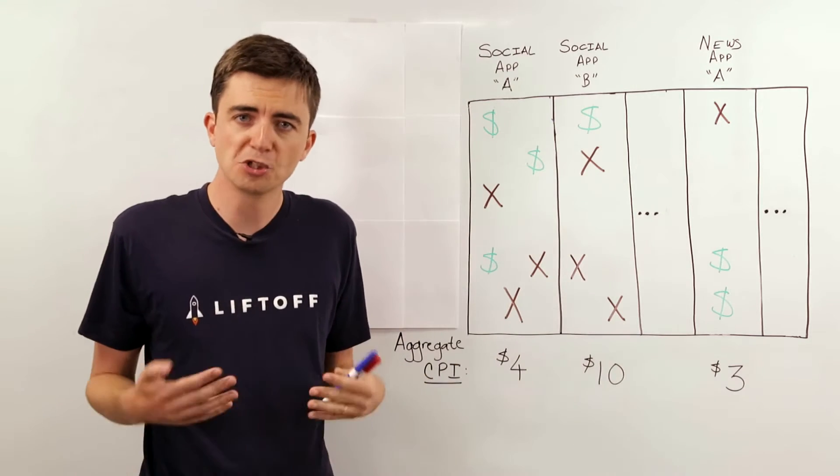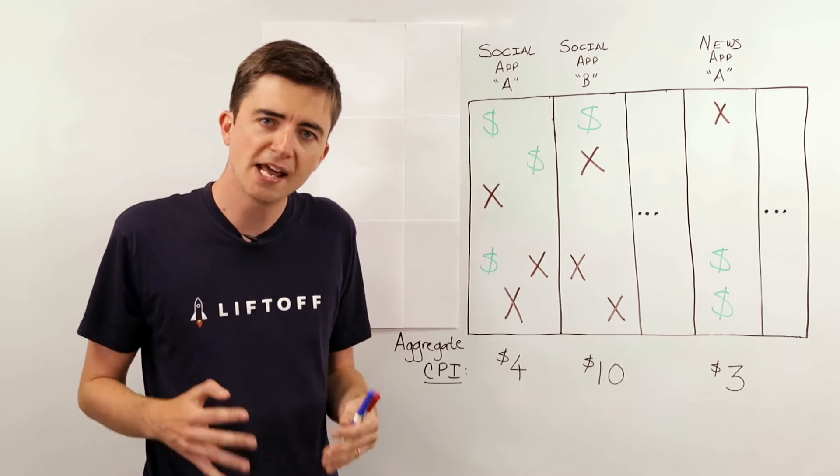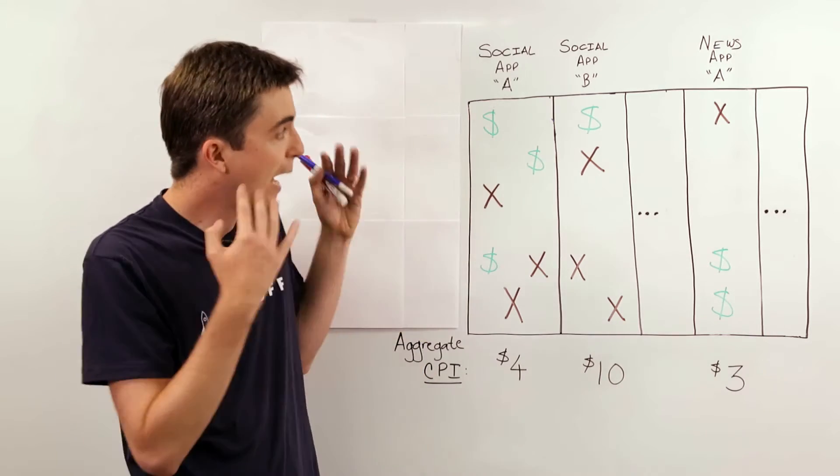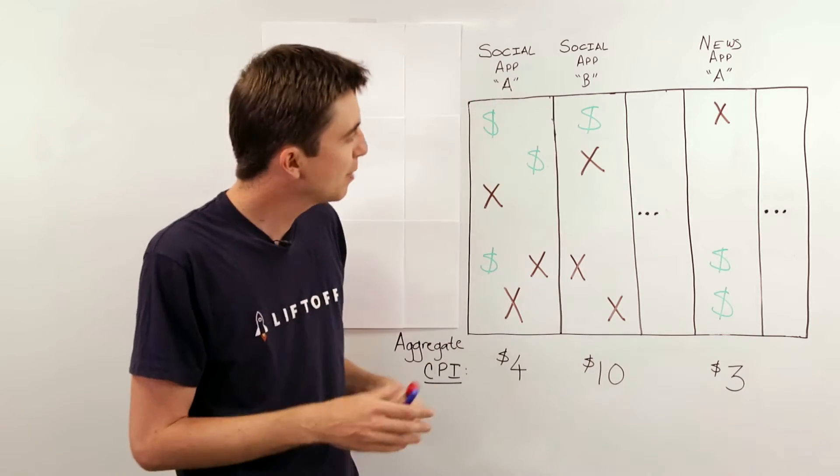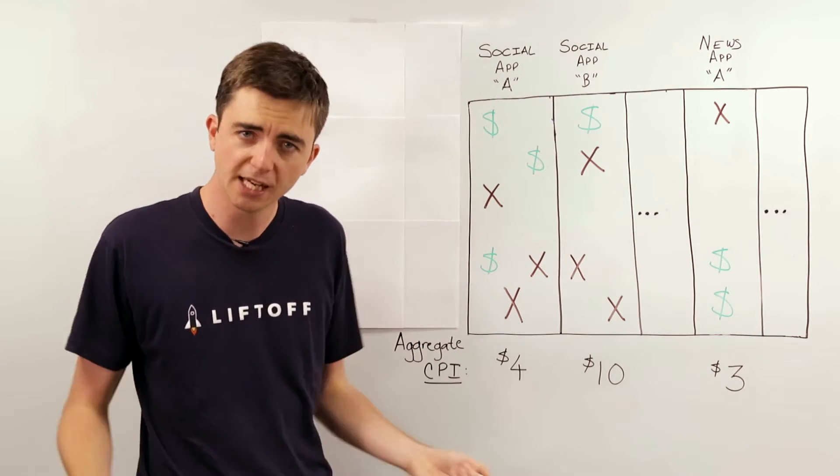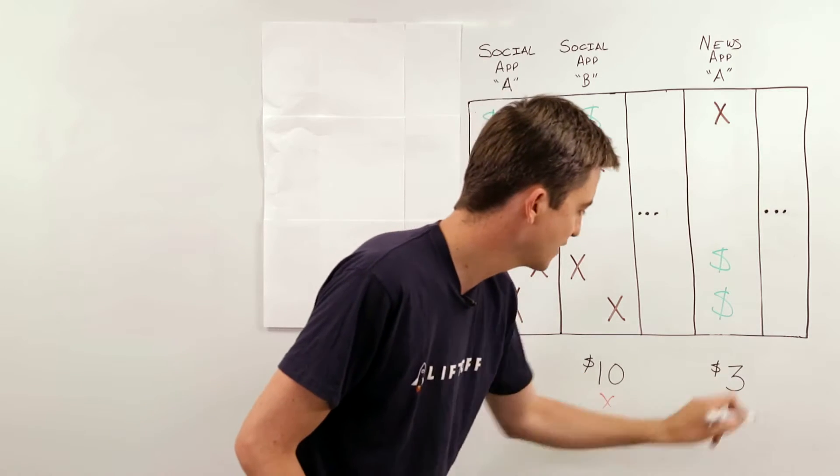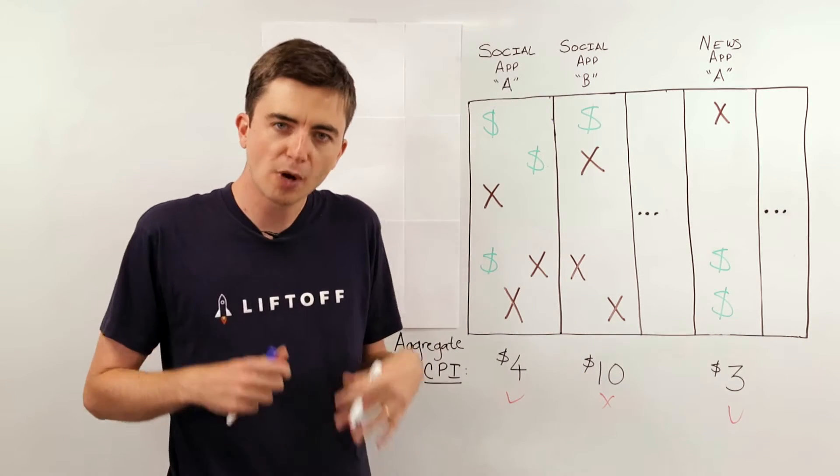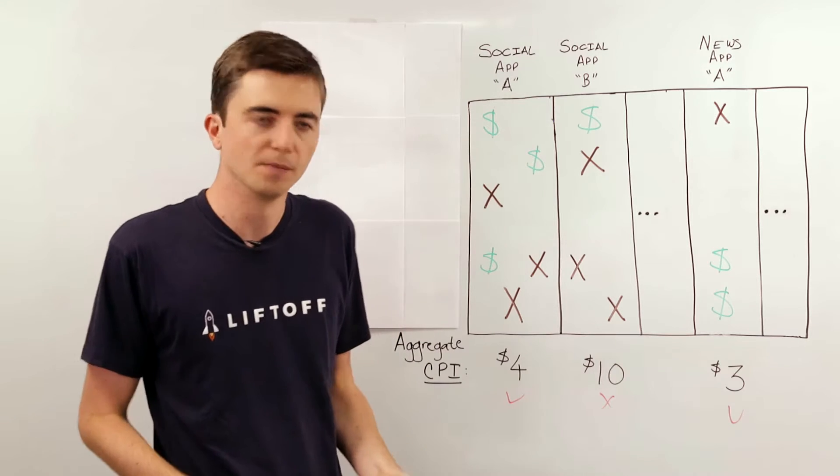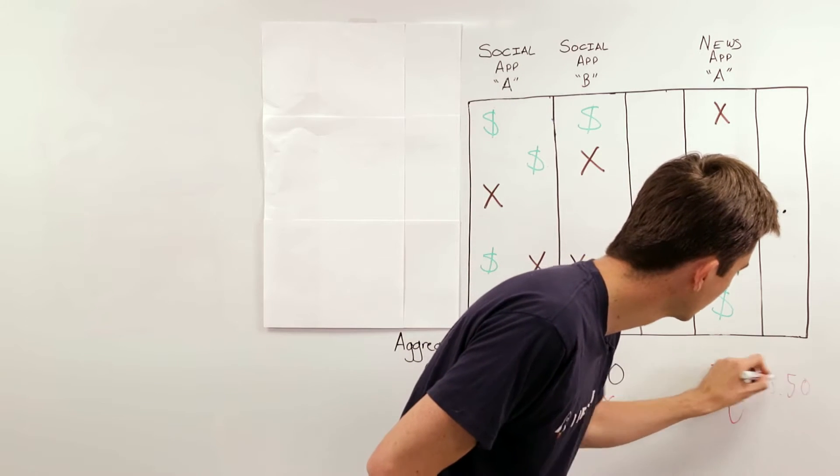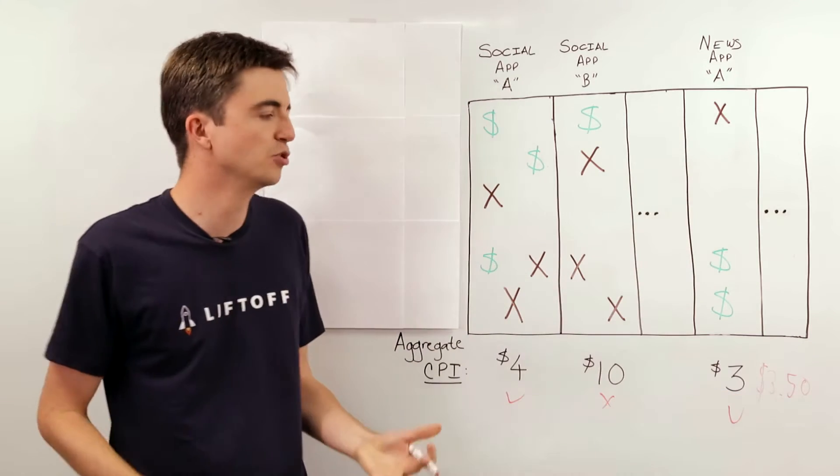Now, typically, in order to optimize your cost per install, an ad network will leverage contextual data, so primarily the application that the user is currently using. And by focusing spend on the best applications, so in this case, this one, not this one, and this one, they can drive a reasonable cost per install. So in this case, $3.50 is about the best you could hope to achieve.